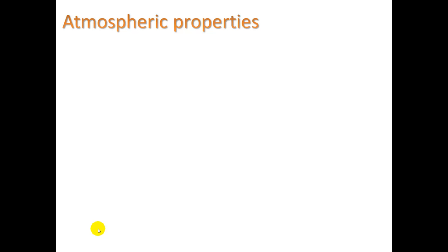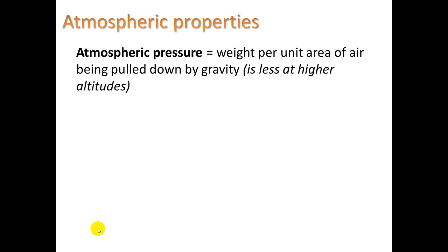And let's go to the next part here about atmospheric pressure. This means the weight per unit area of air being pulled down by gravity. It's less at higher altitudes. And staying on that for a moment there, when we're at sea level, like we are at San Marcos, our skin has about 15 pounds of air pressure pushing against it on every square inch. So that's quite a bit of pressure on our entire body.